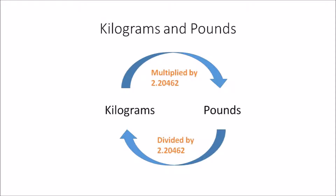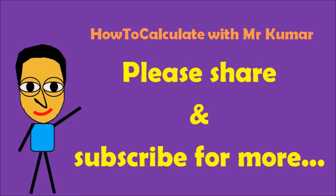That's how easy it is to convert between kilograms and pounds. From kilograms to pounds, multiply by 2.20462; from pounds to kilograms, divide by 2.20462. If you need to estimate, you can use 2 as a rough conversion factor. Thank you for watching — please share and subscribe for more.